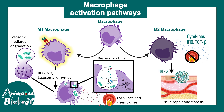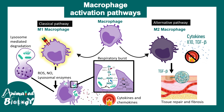TGF-beta secreted by M2 macrophages participates in tissue repair and fibrosis. There are two pathways of macrophage activation: the classical pathway and the alternate pathway. The key point is that macrophages have two different states — they can work in a pro-inflammatory mode or in a repair and regeneration mode. How they are activated dictates what they will ultimately do.